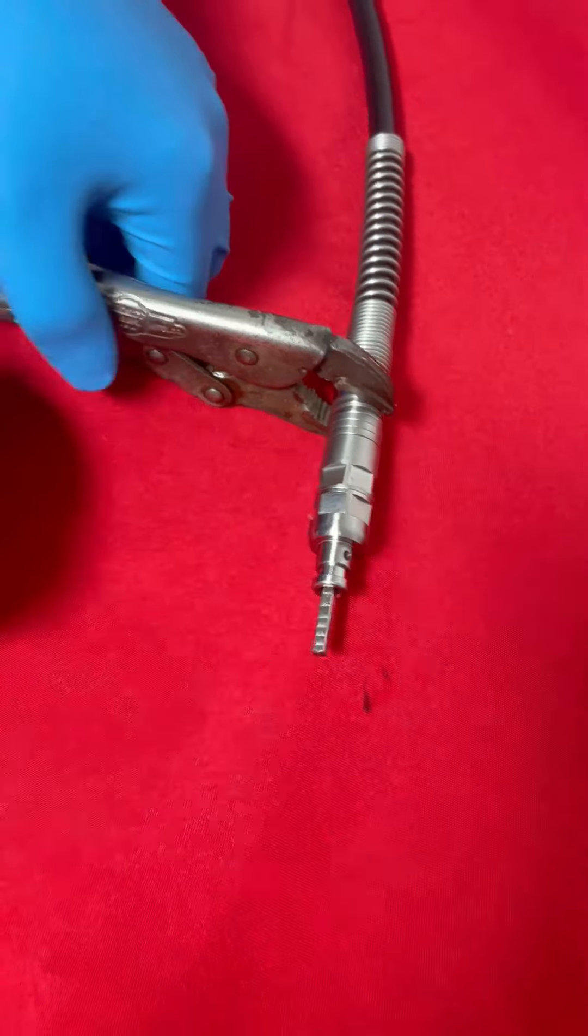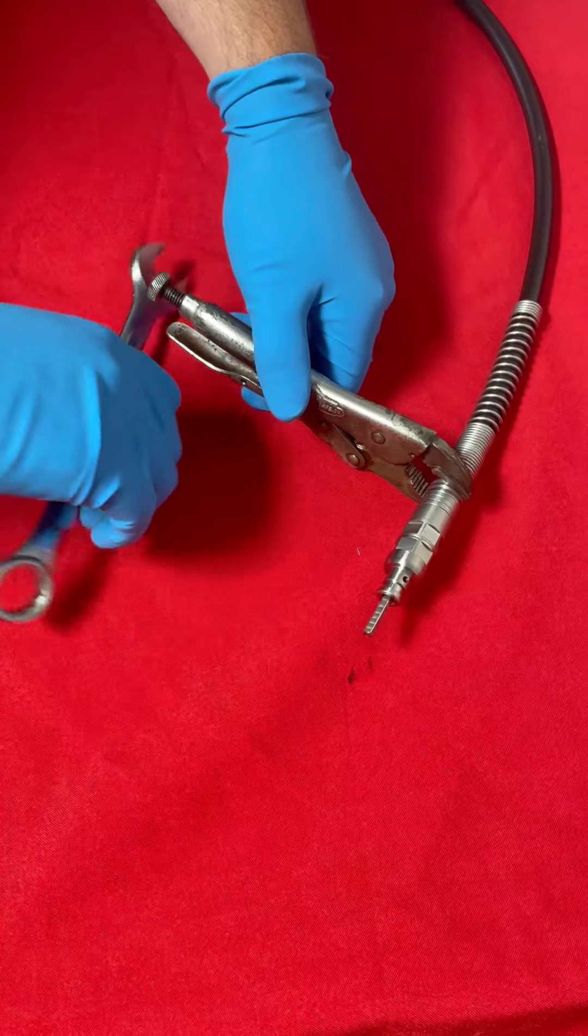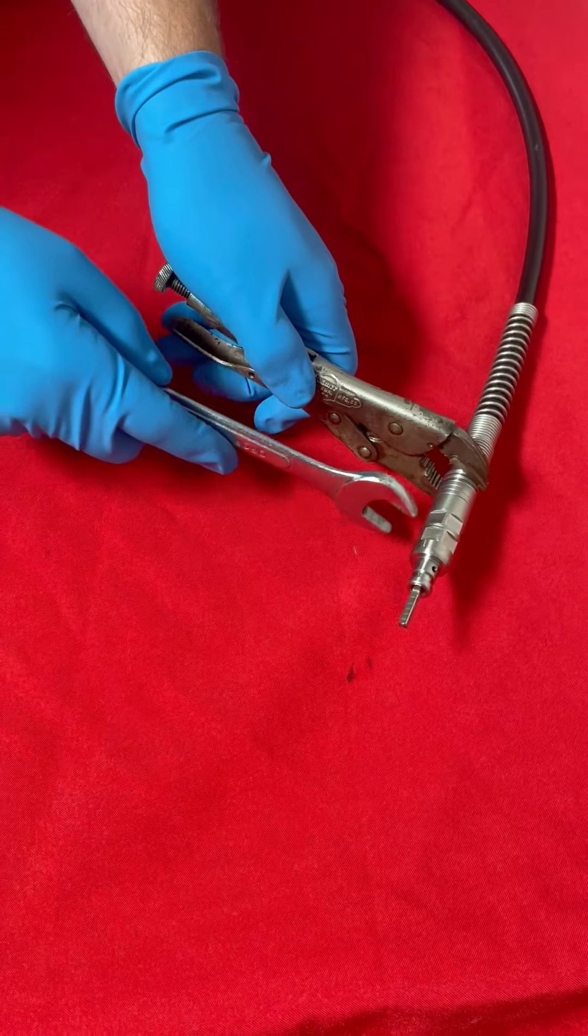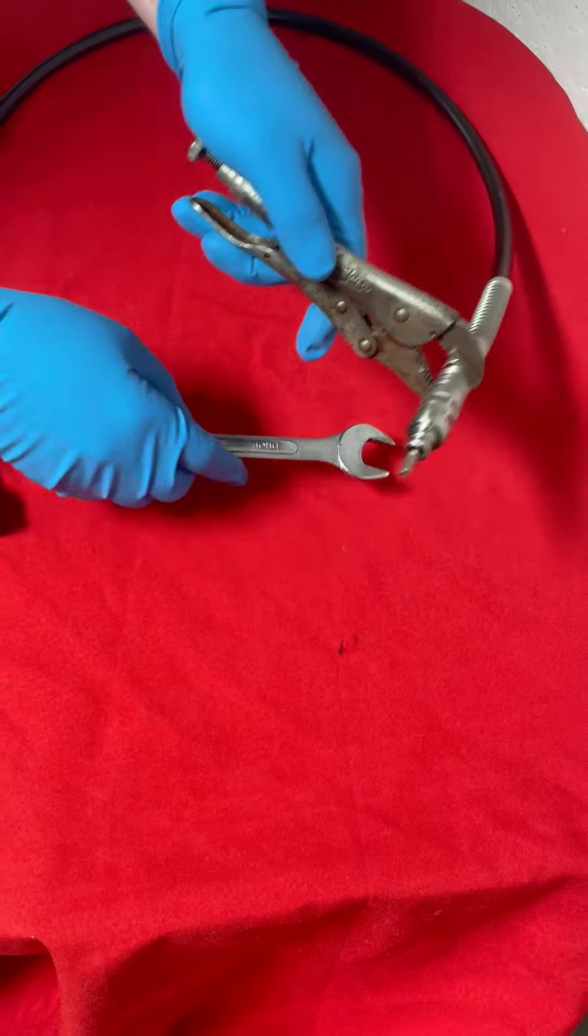So first thing you're going to do is clamp your vice grips on the end here, and you're going to take your 19 millimeter wrench and you're just going to spin this piece off.